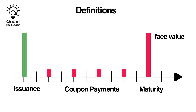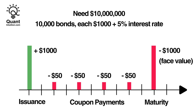Similar to stocks, bonds can further be traded on a secondary market after they have been first issued. Depending on a wide range of factors, the market price at which a bond is trading on the secondary market can vary from the face value or what they originally were issued at.